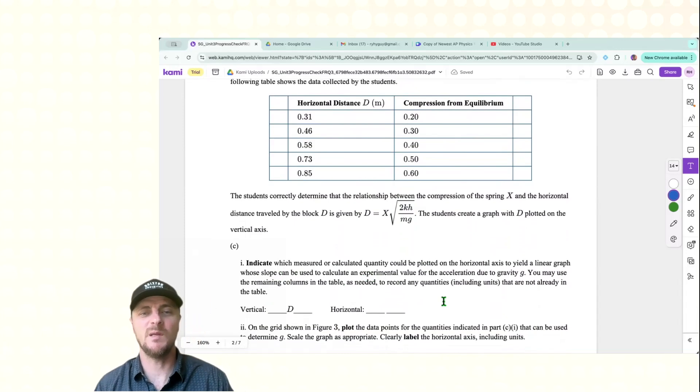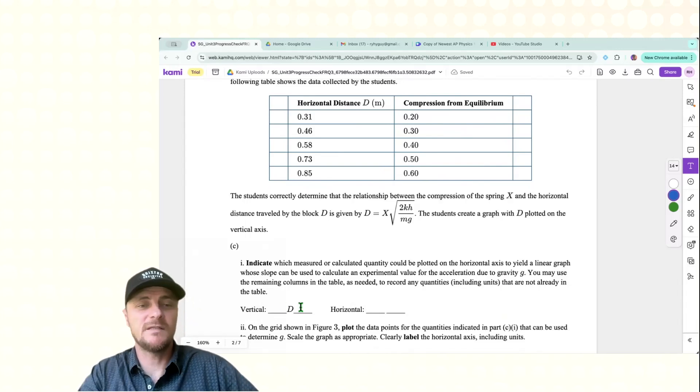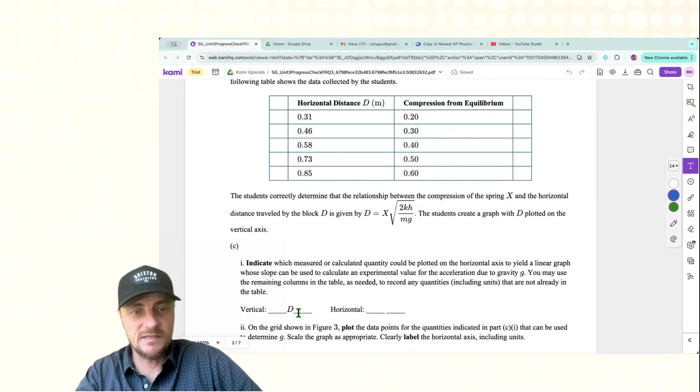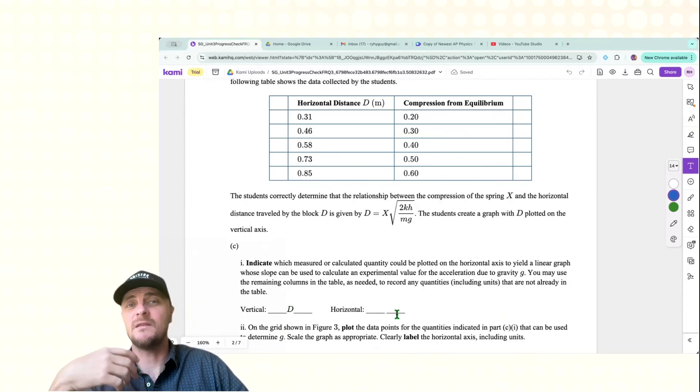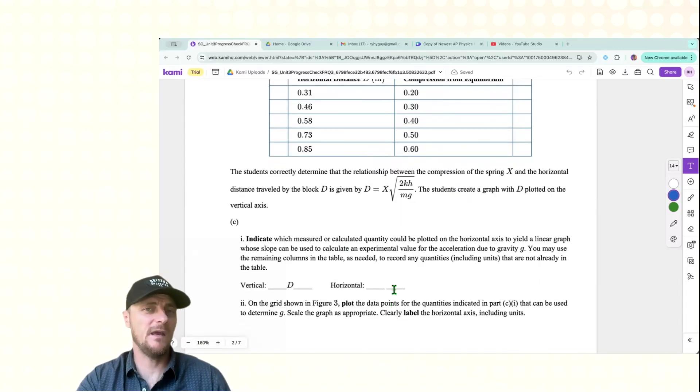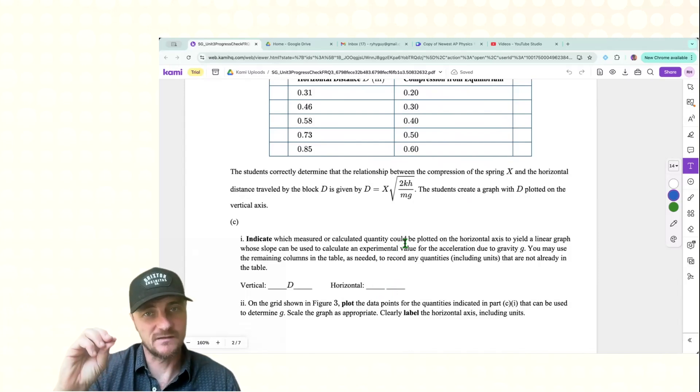Indicate which measured or calculated quantity could be plotted on the horizontal axis to yield a linear graph whose slope can be used to calculate an experimental value for the acceleration due to gravity. You may use the remaining columns in the table as needed to record any quantities, including units, that are not already in the table. They're already telling us what has to go on the vertical axis. That is distance D. Now, looking at the horizontal axis, we can make this whatever quantity we want that makes physical sense from this equation. I'm just going to make it X. I'm going to keep things simple. Now, keep in mind, when I just put in X, that means that our slope is not going to directly give us G. Our slope will give us some answer, some numeric answer, and we will set that equal to something that does have G in it.